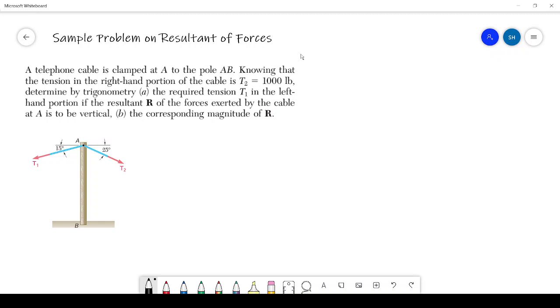So let us solve this problem. First we draw T1. So this is the T1, and this angle is 15 degrees. And R is given vertical, so we can draw R here.